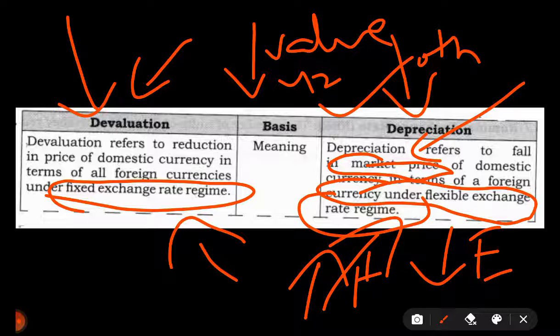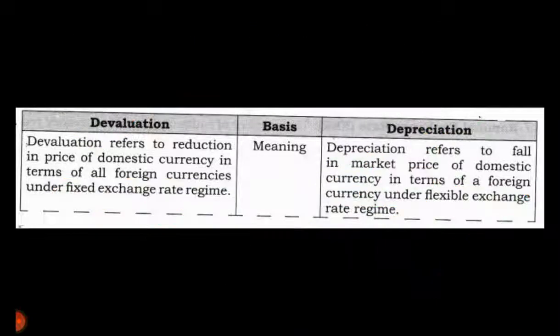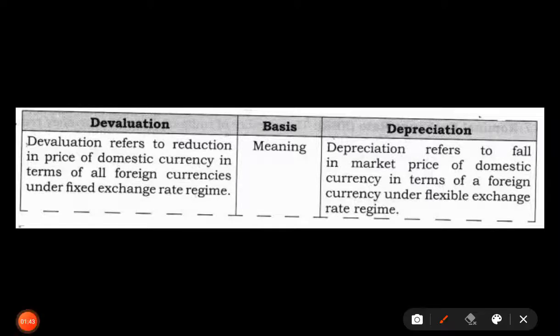Ultimately what happens is that the local currency becomes cheaper. So that's the difference: devaluation is artificial, whereas depreciation is natural — it is the result of the forces of demand and supply.